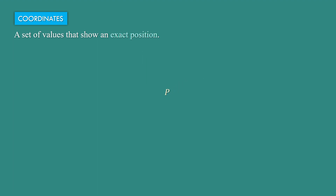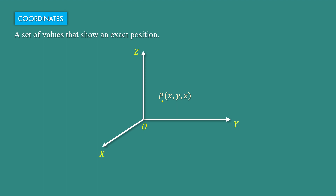If we consider the same point in three-dimensional coordinate system, that is in Cartesian coordinate system, then at first we need to move along X-axis, then along Y-axis and then along Z-axis. Then we will get the exact position of this point in three-dimensional Cartesian coordinate system.